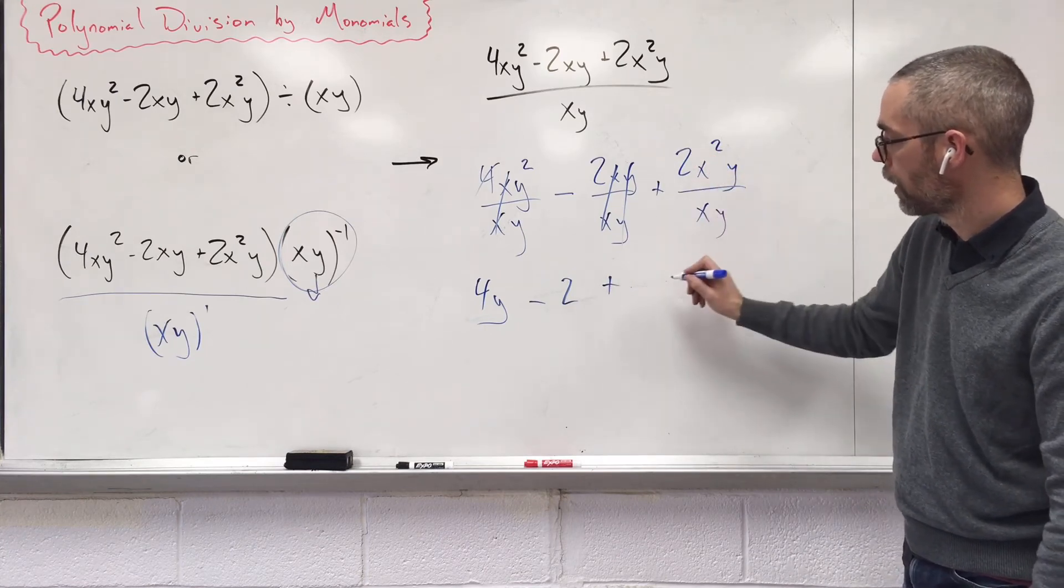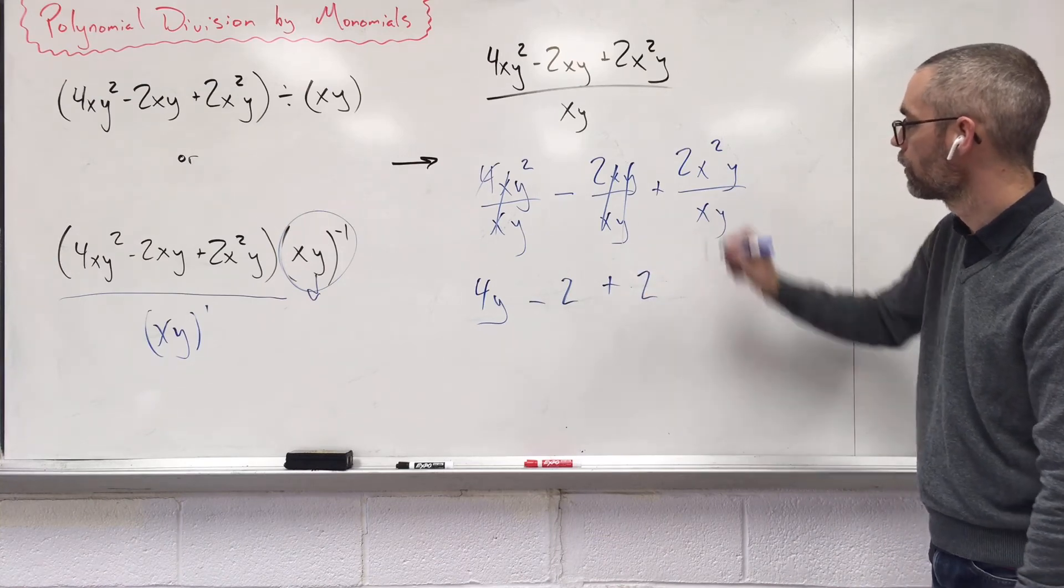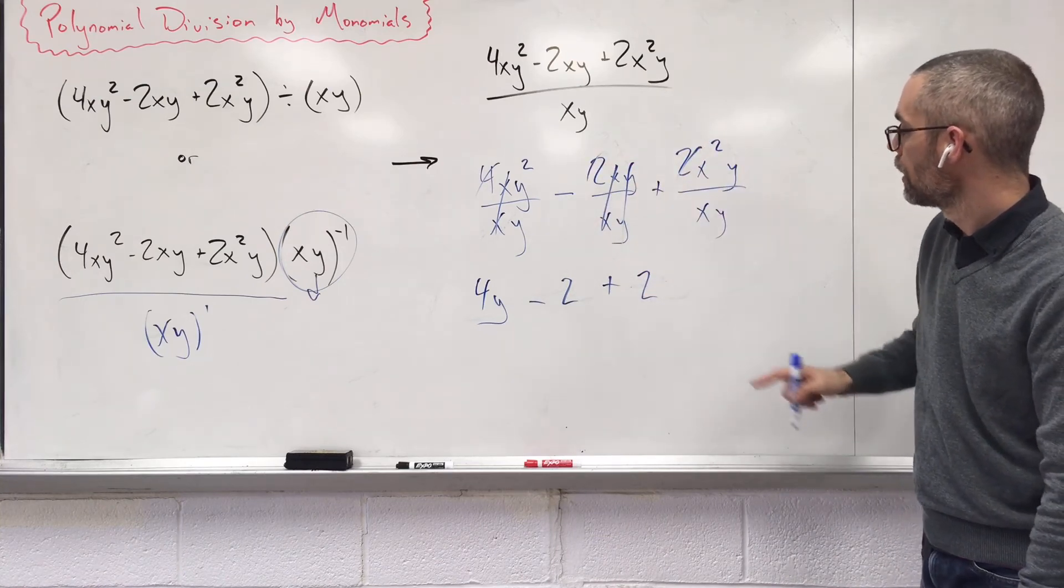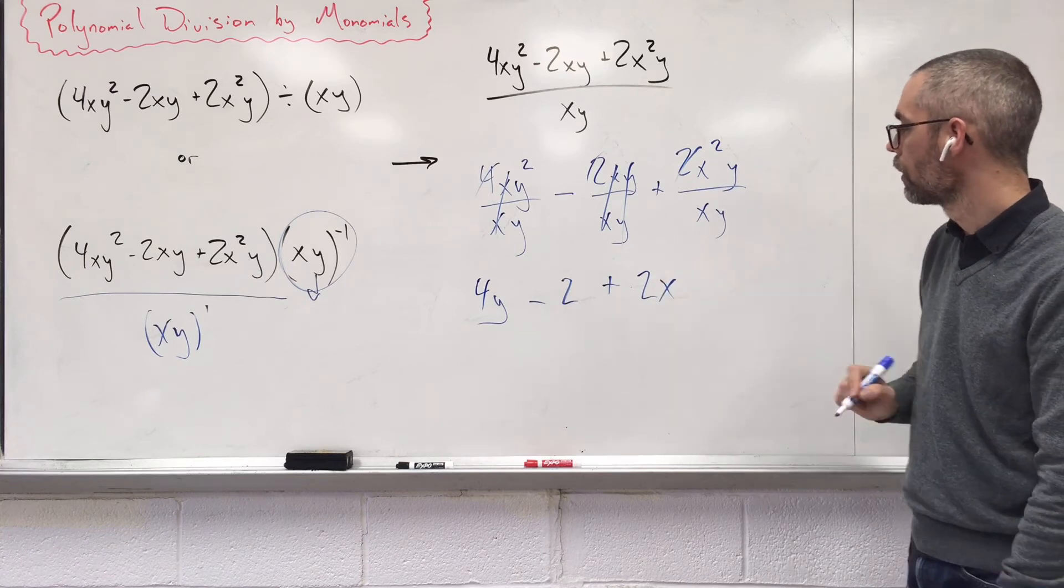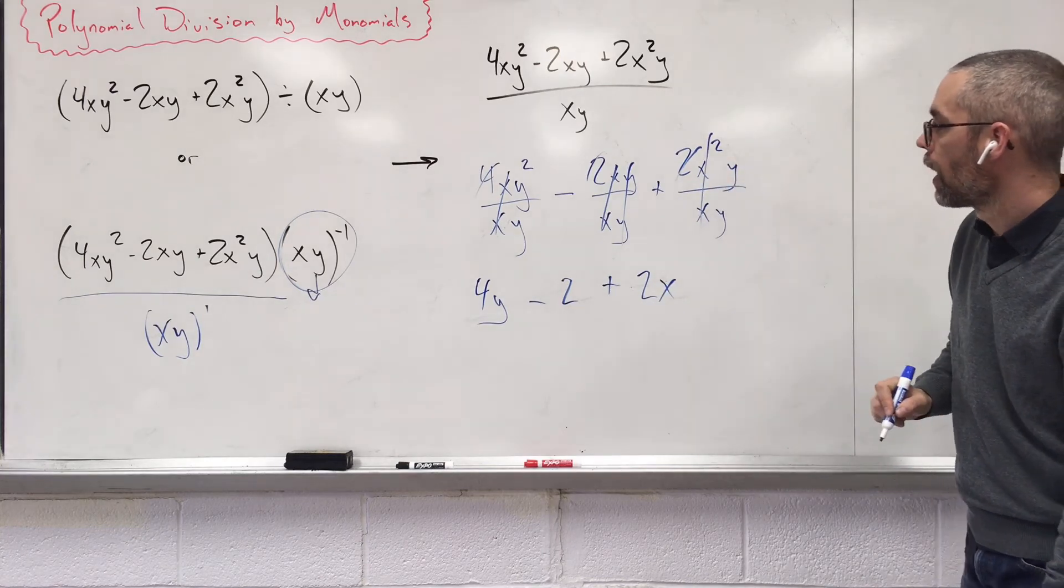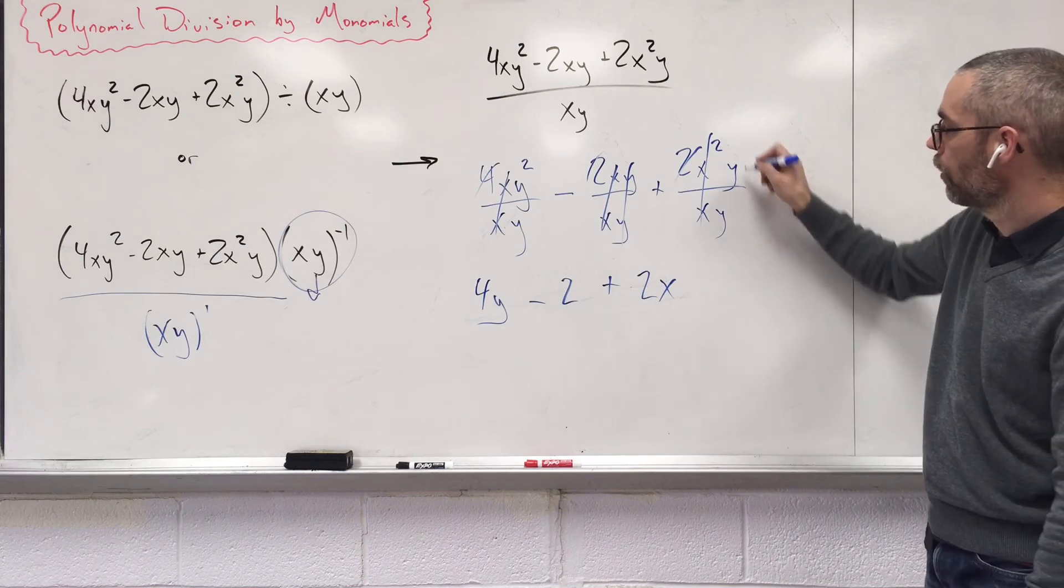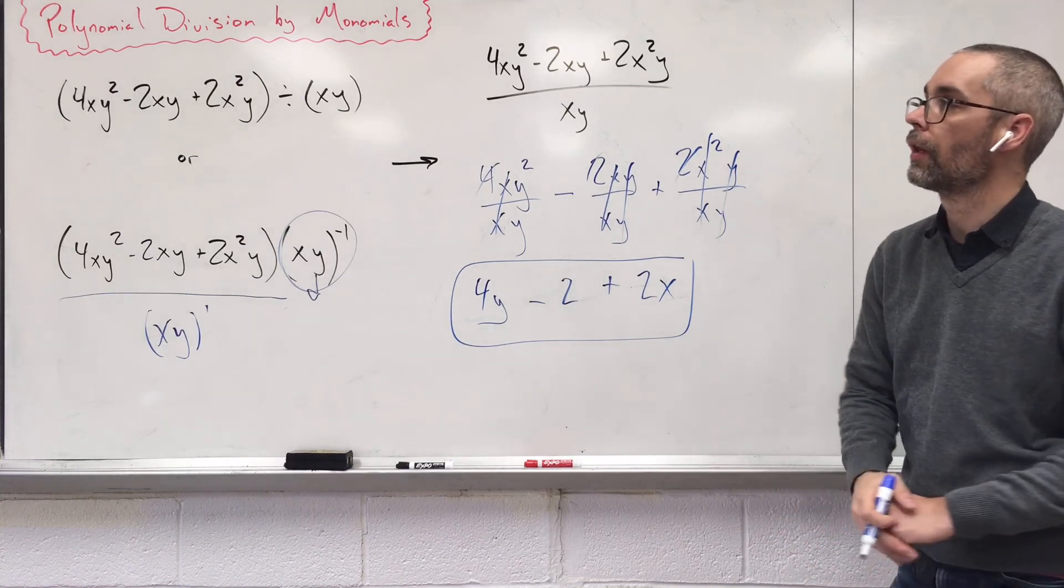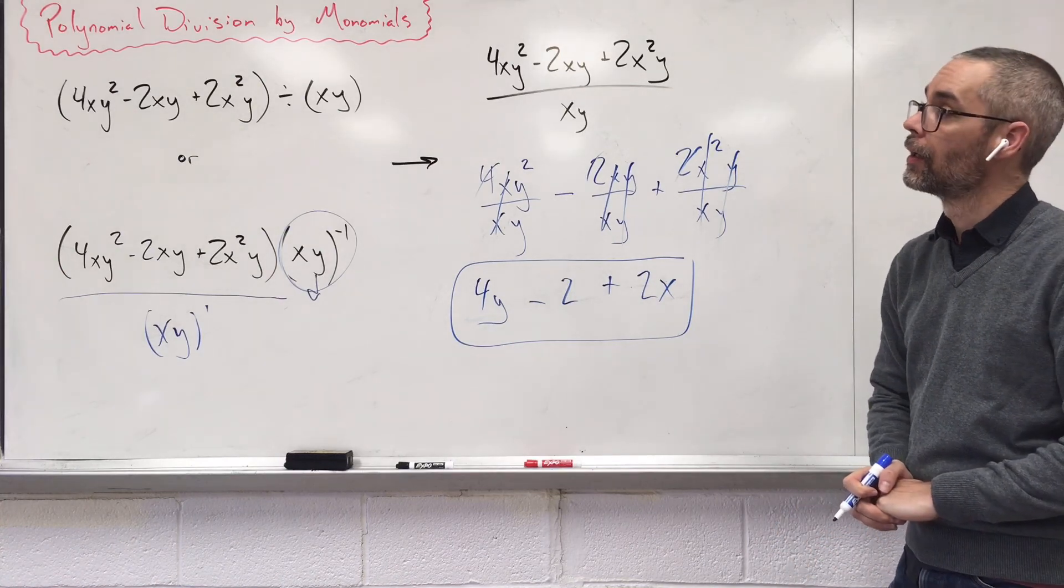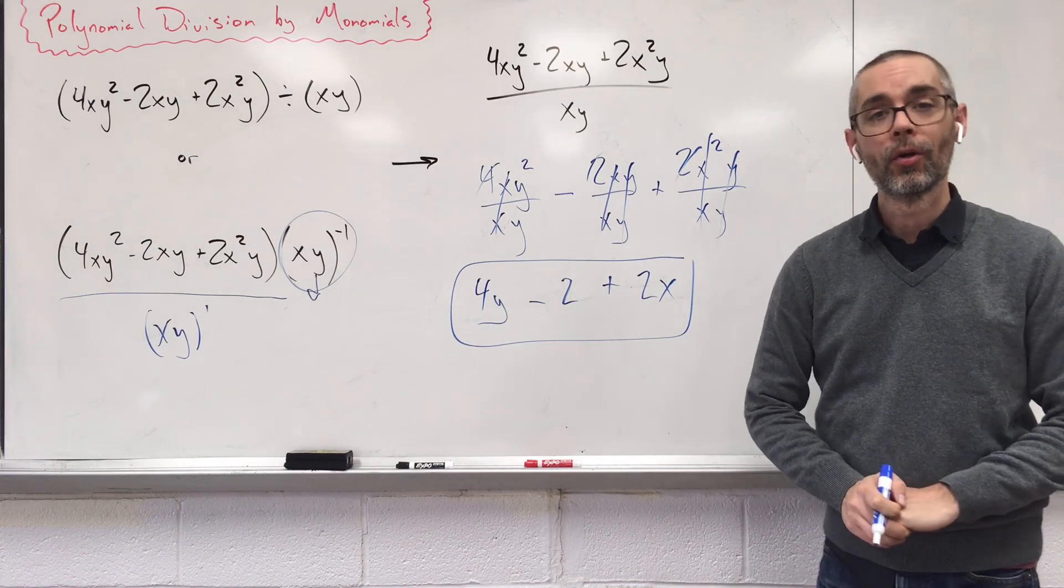Okay, nothing combines with the 2, so we bring it down. My x's, I have more x's up top. I've got one extra. My y's, they both pair up, they disappear. What are we left with? This ugly thing, and that's totally okay. And that's dividing polynomials by a monomial.